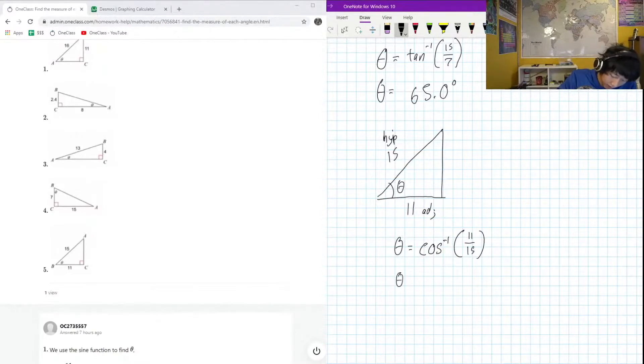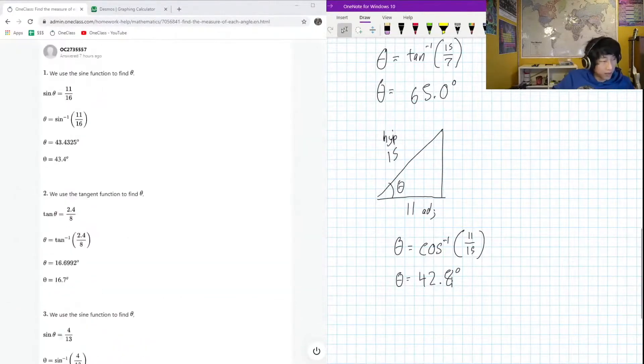Let's find that angle: inverse cos 11 over 15. And this is 42.8 degrees. Hopefully we came to the same answer down here - 42.8, yeah awesome.